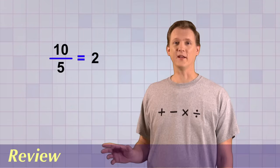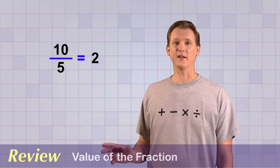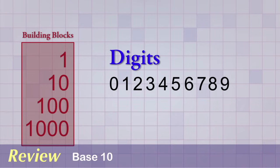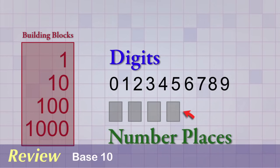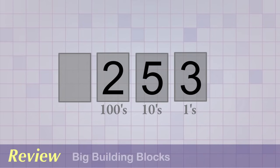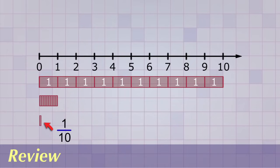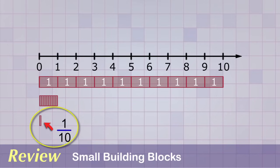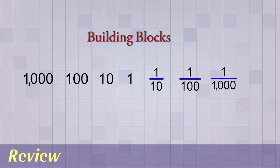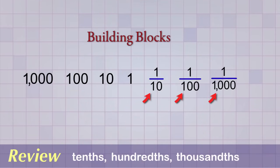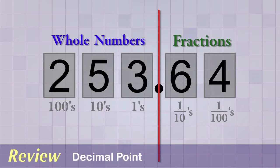In the next section we'll learn how to convert some special fractions into decimals. But before that, let's do a quick review. If we take a fraction and do the division, we'll get an answer — that answer is called the value of the fraction. Our number system is called Base 10. It uses powers of 10 as building blocks for counting, as well as 10 different digits. Number places are like counters that hold one digit at a time and help us count how many of each Base 10 building block a number is made of. There are large building blocks like 1, 10, 100, and 1000 that help us make really big numbers, and there are very small Base 10 building blocks — fractions smaller than 1 — called tenths, hundredths, and thousandths. The decimal point is a separator between the number places that count values of 1 or greater from those that count values smaller than 1.